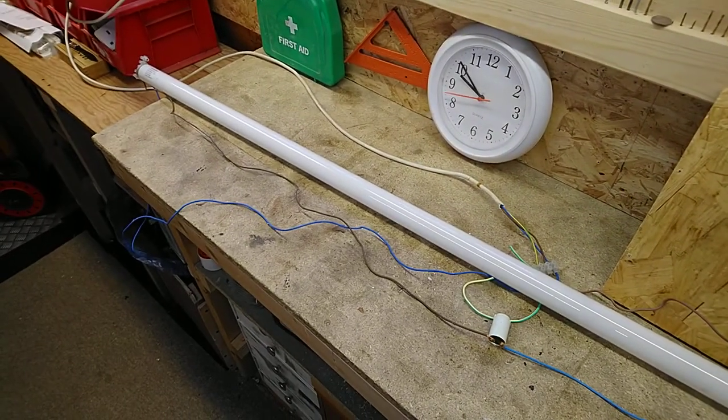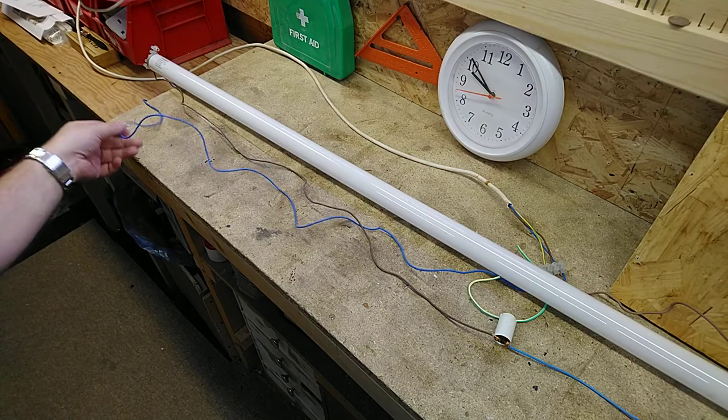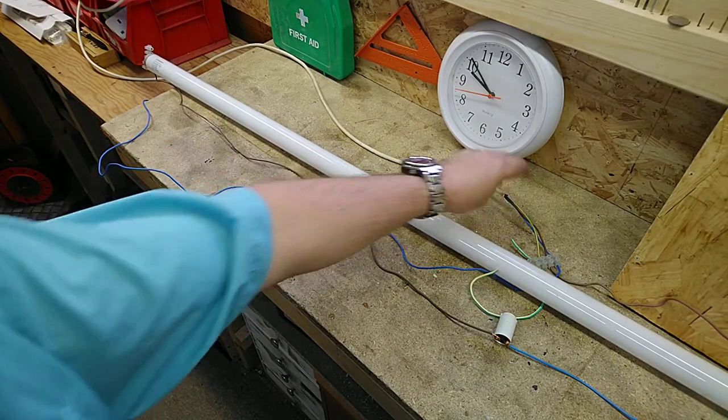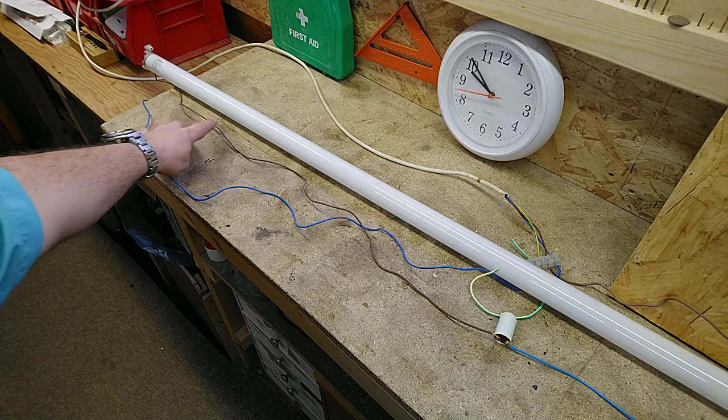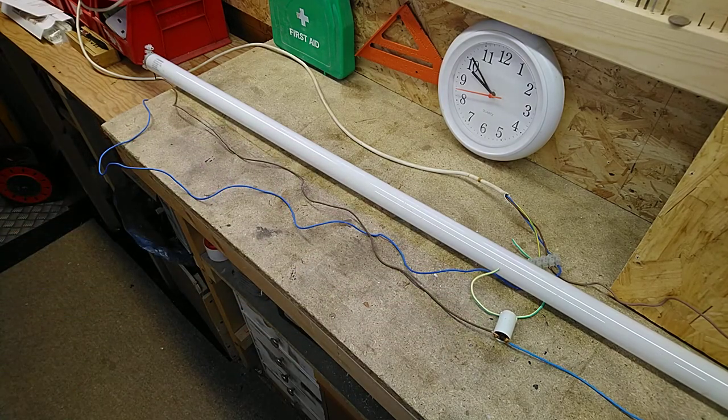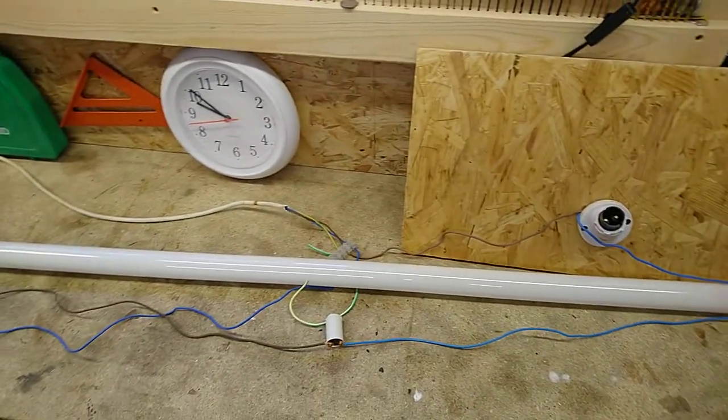The neutral is the blue wire on this side and that returns back to this connector block. The other wire goes to the starter, and then the blue wire goes to the other end of the lamp.